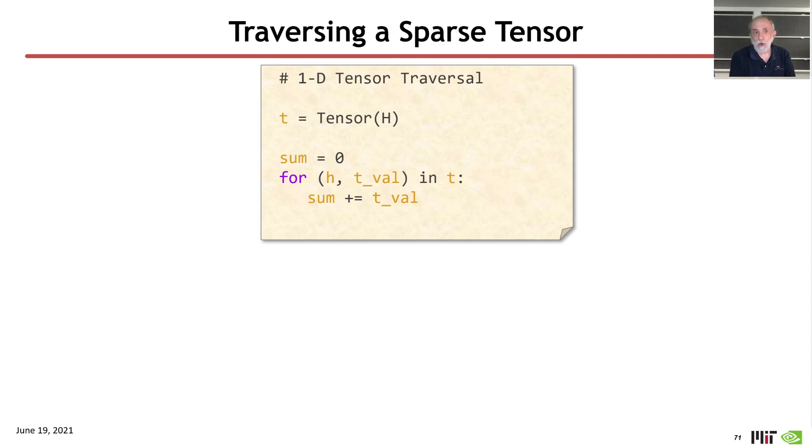So, going back to our very simple representation of a tensor, I'm going to talk about a 1D tensor whose rank name is H, and I'm going to show how you can represent a traversal of that. I'm going to do a very simple operation here,